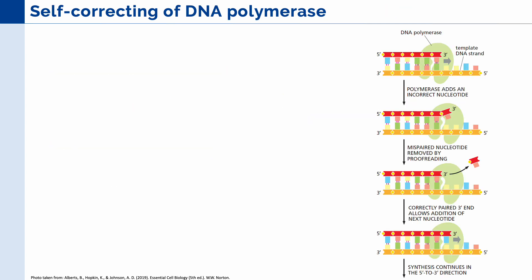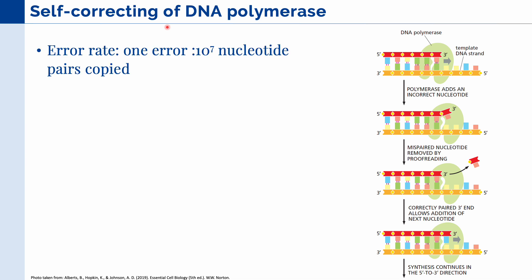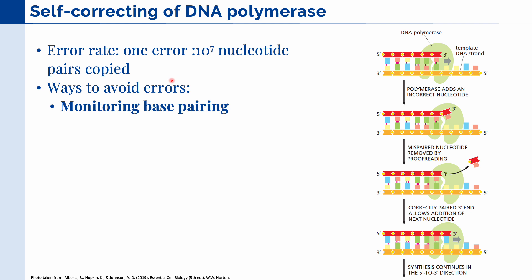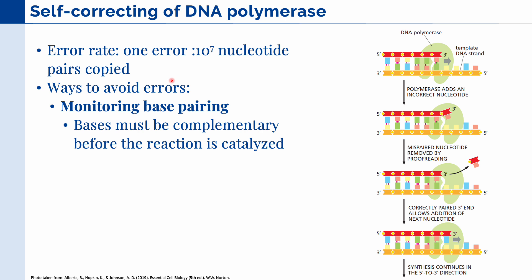Let's talk about a very important function of DNA polymerase: its self-correcting ability. This allows DNA polymerase to have a very low error rate — around one error per 10 to the 7th nucleotide pairs copied. It needs this small error rate because changes in the DNA can have profound effects on the cell. First, it monitors base pairing — DNA polymerase makes sure that the bases are complementary before it catalyzes the reaction to create the phosphodiester bond. The complementary base pairings are cytosine and guanine, and adenine and thymine.